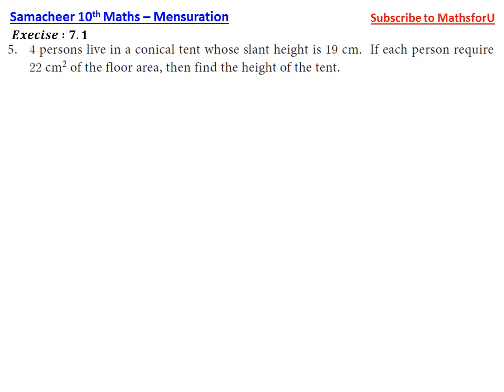Dear students, in the 10th Maths Mensuration chapter, Exercise 7.1, Problem number 5: Four persons live in a conical tent whose slant height is 19 cm. If each person requires 22 cm² of floor area, then find the height of the tent.